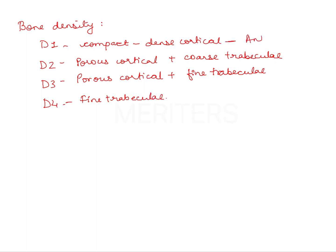Anterior mandible usually has D1 density of bone. D2 and D3 are found in the anterior and posterior mandible and maxilla. D4 is found in the posterior maxilla.